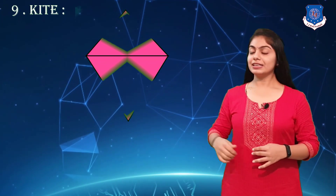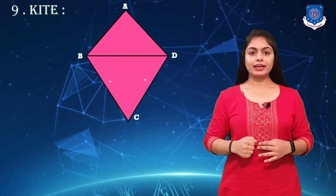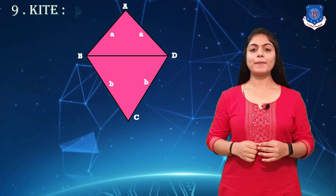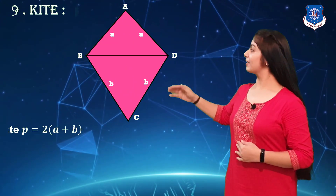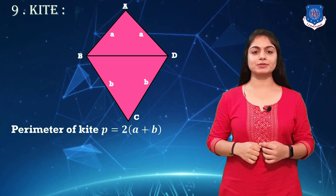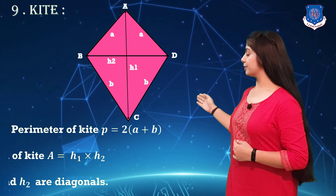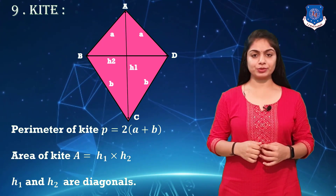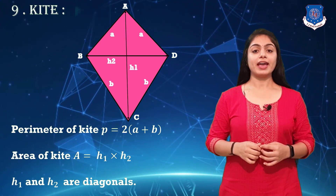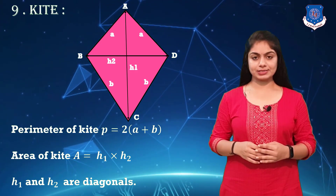Our next plane figure is the kite. Look at the figure — adjacent side pairs are equal. The perimeter of a kite is 2(a + b), and the area of a kite is d₁ × d₂, where d₁ and d₂ are the diagonals.